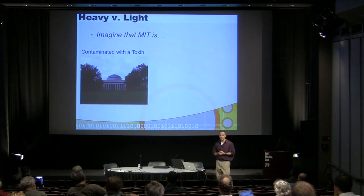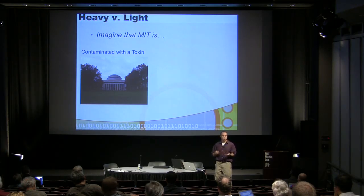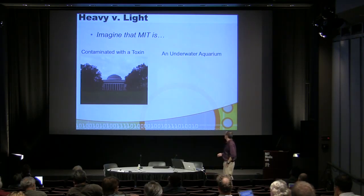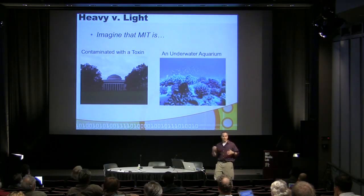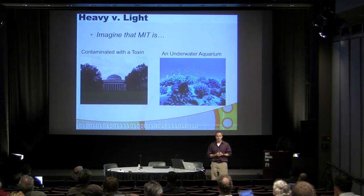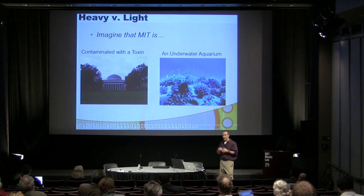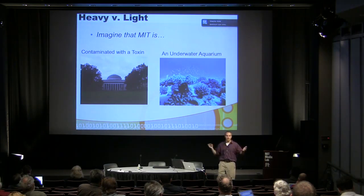If we thought there was some chemical spill on the MIT campus, we would just need to provide the users in that simulation with some information on where that toxin is and what it's doing. Compare that with imagining MIT is an underwater aquarium and you're some sort of fish — you'd really need a lot more virtual information about when you're bumping into things, spatial scale, how fast you can move, and temporal as well as spatial differences.